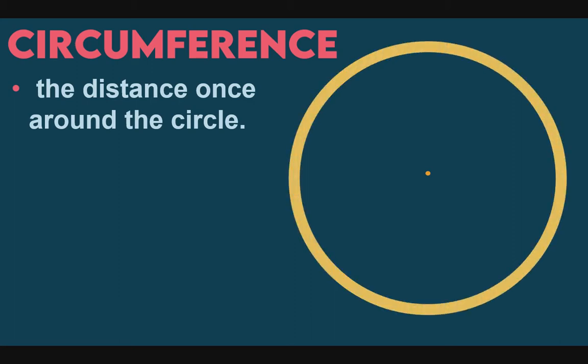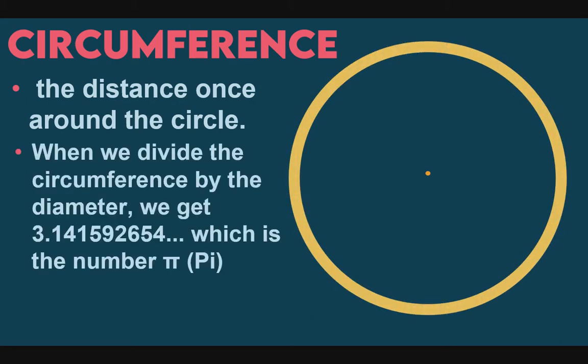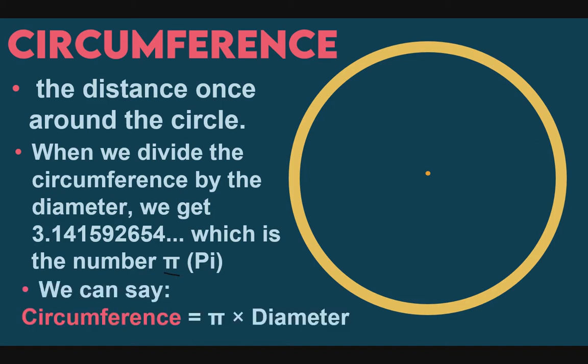Next, circumference. We already know this. Circumference is the distance once around the circle. When we divide the circumference by the diameter, we get 3.141592654 and so on, which is the number pi with a symbol like this.